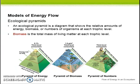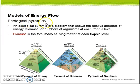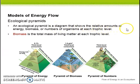For our last slide, please write down the following: Models of Energy Flow — Ecological Pyramids. An ecological pyramid is a diagram that shows the relative amounts of energy, biomass, or numbers of organisms at each trophic level.